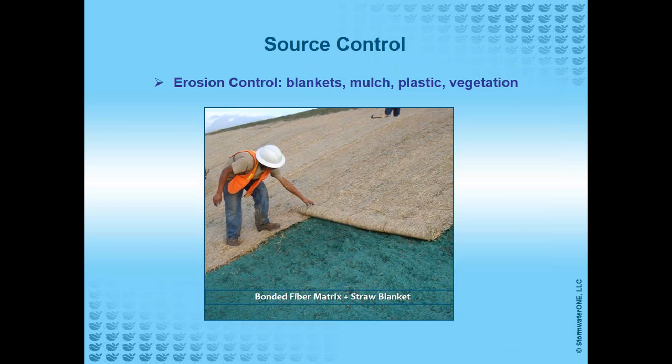Source control means covering the soil with blankets, mulch, plastic, or vegetation. This is also from Payne Field — a very risk-averse project manager used bonded fiber matrix covered with a straw blanket, either one of which would have been adequate. So this is not a low-cost BMP, but it illustrates two different means of covering the soil. The water that flowed off this slope had no opportunity to contact the soil, so it was much cleaner.